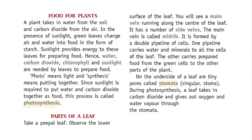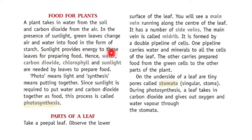The next topic is food for plants. A plant takes in water from the soil and carbon dioxide from the air. In the presence of sunlight, green leaves change air and water into food in the form of starch. Sunlight provides energy to these leaves for preparing food. Hence water, carbon dioxide, chlorophyll, and sunlight are needed by leaves to prepare food.